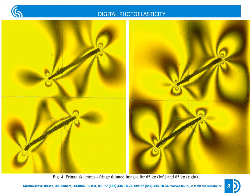The tool allows us to find the points belonging to the isochromatic fringe pattern with minimum light intensity. Here, green points show the points with minimum light intensity.